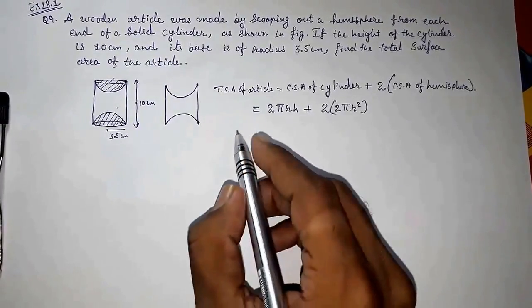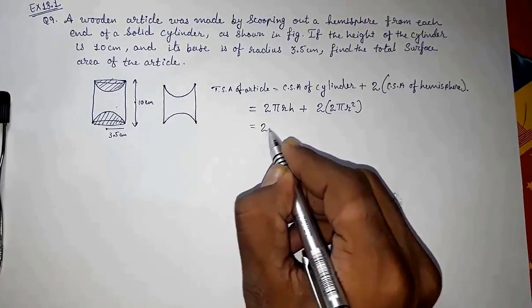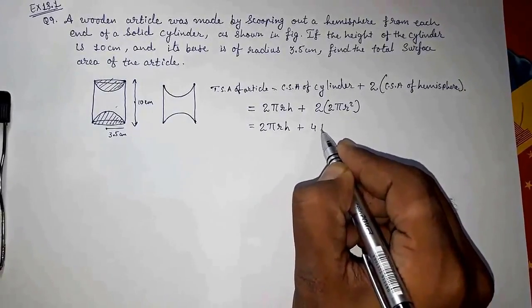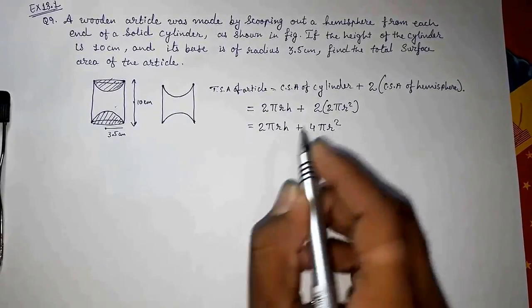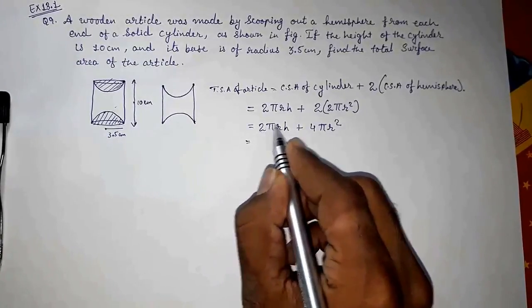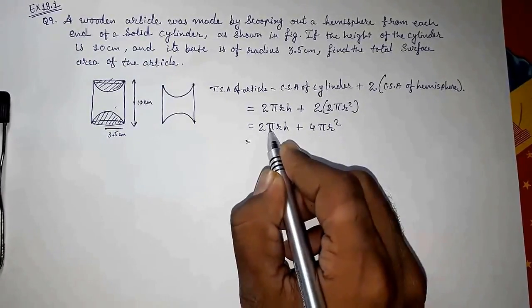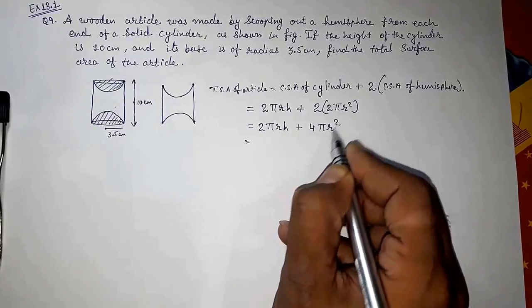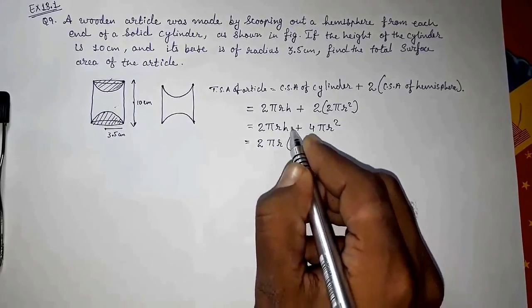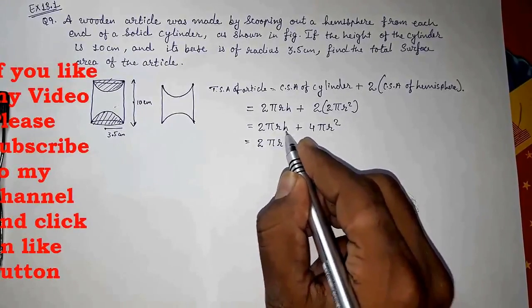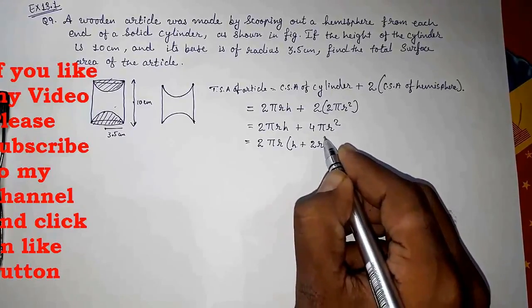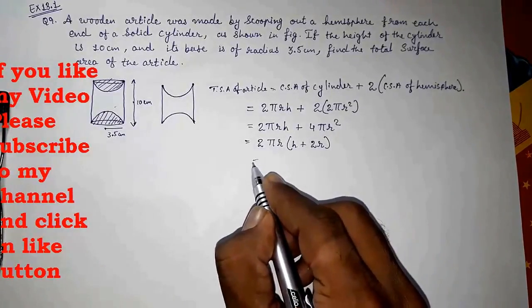So now we have to first open this bracket: 2πrh plus 4πr². Now we can take out common also very easily. You can see two here and in four also we're getting two, π, one r here, two r. So we are going to take out common 2πr, and remaining will be h and here remaining 2r. So now we are going to put the values.